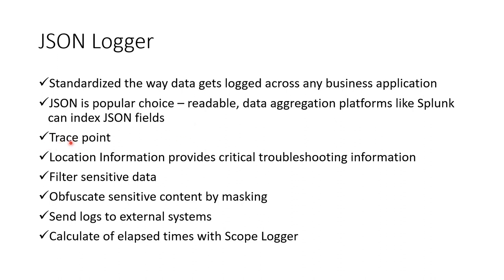JSON Logger also provides a trace point like before request, after request, start of the flow, end of the flow. So you can know that the log data is logged at what point of the execution of the flow. Log data also provides the location information — it has the file name, it has the flow name, it also has the line number.